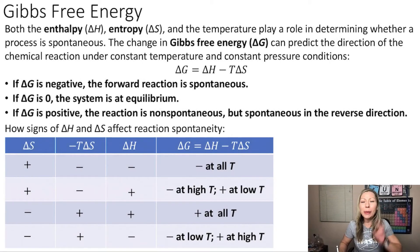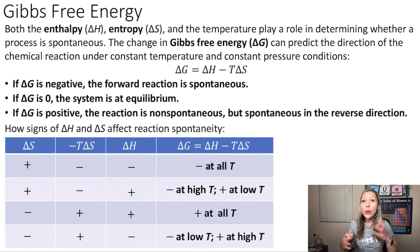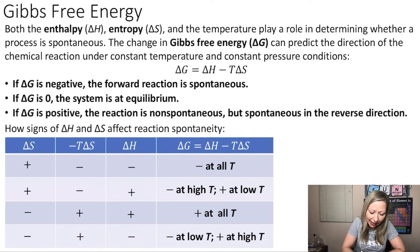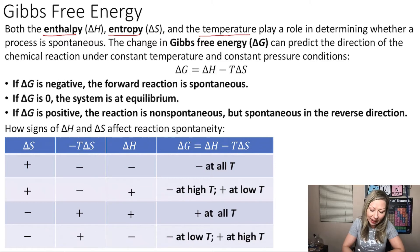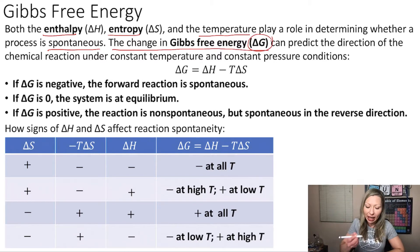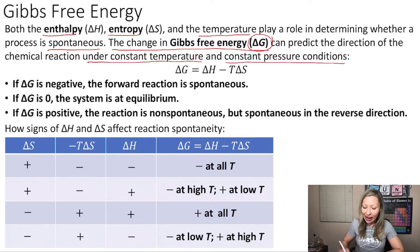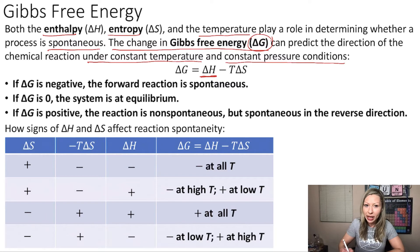Let's talk about my second favorite thermodynamic quantity, the Gibbs free energy. We already talked about spontaneous reactions, and actually both the enthalpy, the entropy, and the temperature play a role in determining whether a process is spontaneous. The change in Gibbs free energy, or ΔG, can predict the direction of a chemical reaction under constant temperature and constant pressure conditions. ΔG can be calculated using the change in enthalpy minus the temperature times the change in entropy.